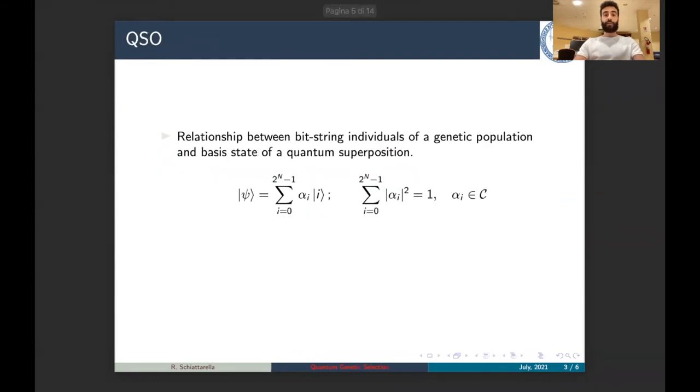The first concept is the concept of quantum superposition. If we work with a quantum processor composed of n qubits, we can work with a quantum state that is composed of 2 to the n basis states, that can be seen as bit strings. Each basis state has a certain probability that is the square modulus of the coefficient in the superposition to be measured.